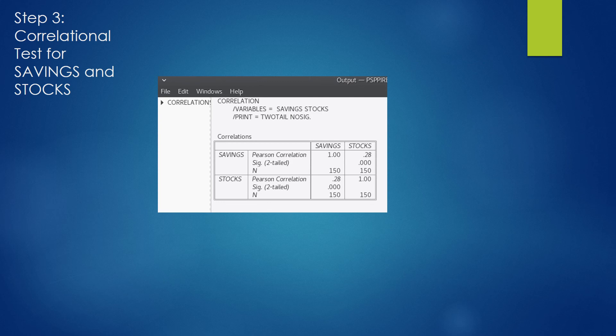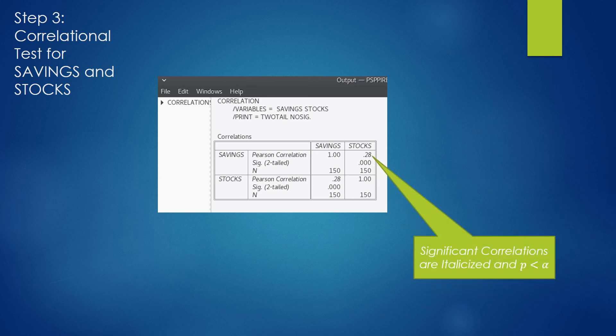After clicking OK, you will see the results appear in a little matrix like this. This cell in the matrix is the intersection of stocks and savings. As you can see, the correlation coefficient is 0.28 and has a significance, or a p-value, of 0.000. This is a significant correlation and is italicized by PSPP.